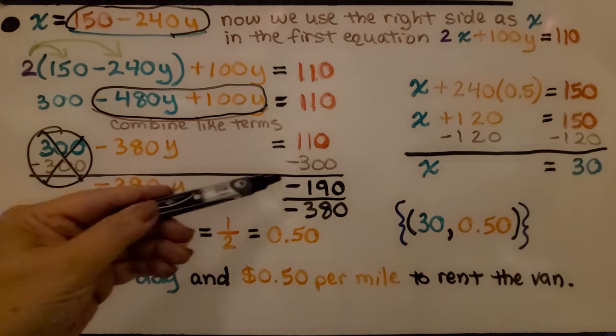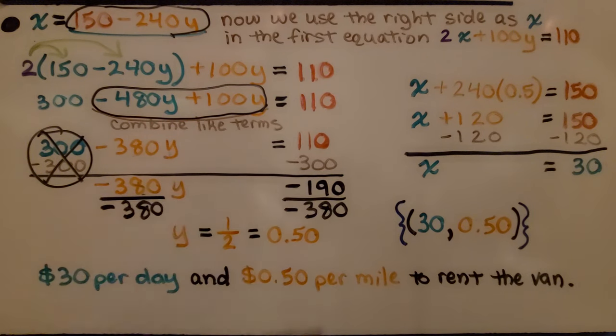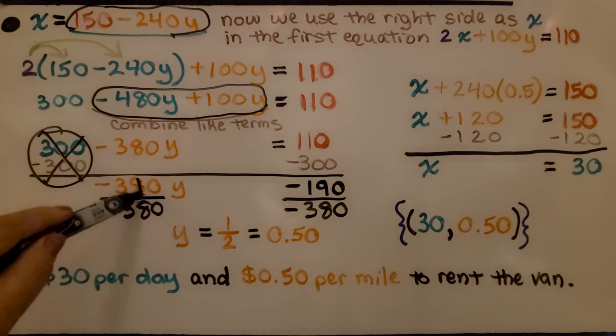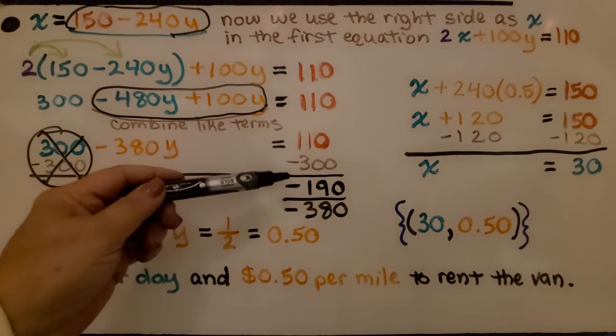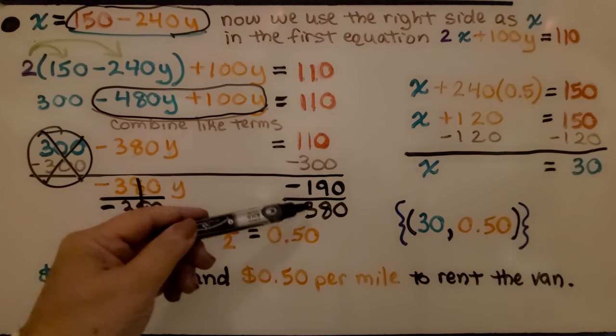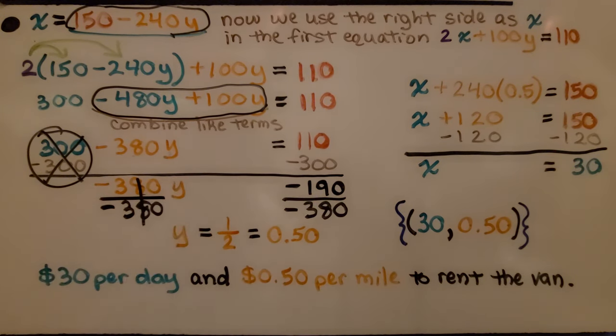Now, we have negative 380y equals negative 190. We divide both sides by this coefficient, negative 380. Same numerator and denominator, we have 1y. And when we divide negative 190 by negative 380, we get a positive 1 half. Now, we can write it as a decimal as 0.5 or 0.50.